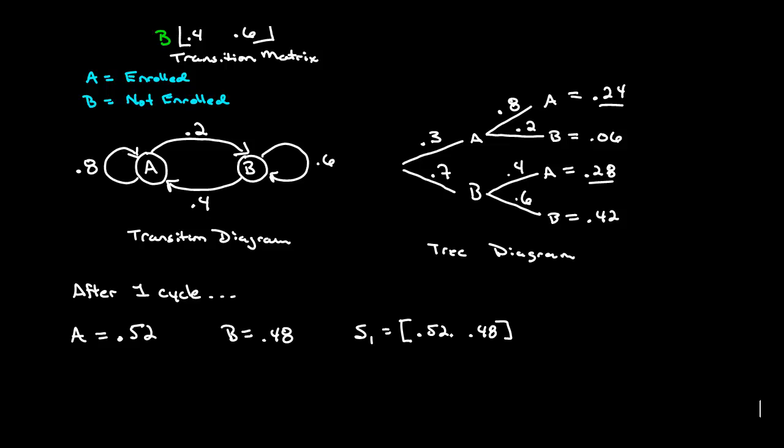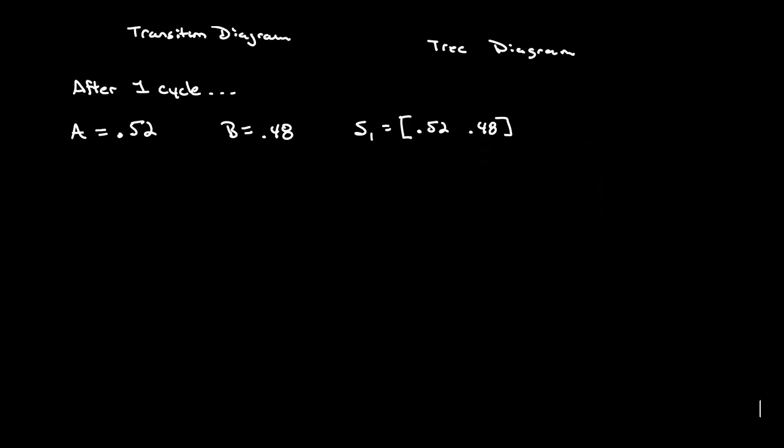Now another way to come to the same conclusion without drawing out a tree diagram is to do the multiplication of the matrices. So what we'll do is we'll take our initial state, we'll multiply it by our transition matrix, which we're calling P in this case, it can be called whatever you want, a lot of times they call it T, and that'll be equal to the current state or the state after one cycle. So what we'll do is we'll take the initial matrix, which if you go back and you look was 0.3, 0.7 and we'll multiply that by the transition matrix.